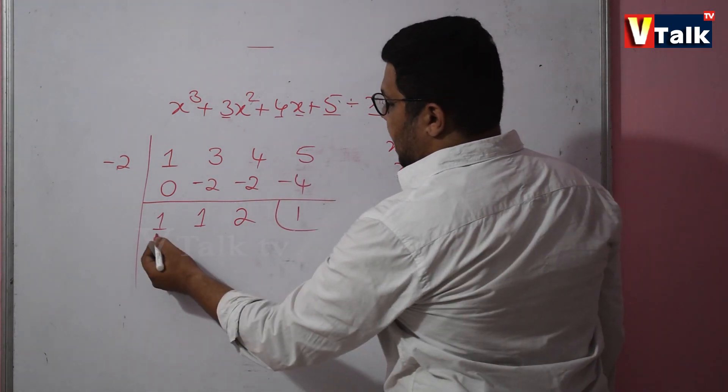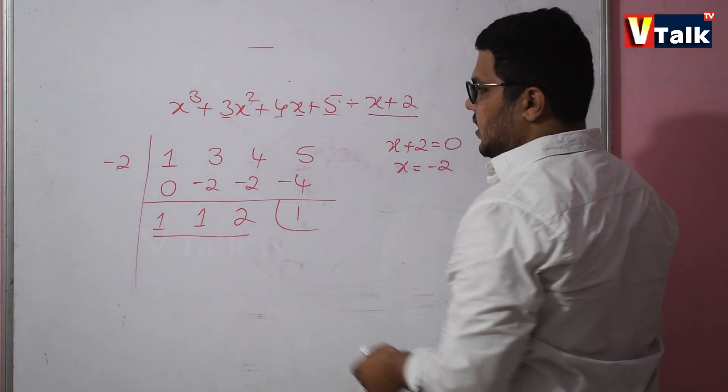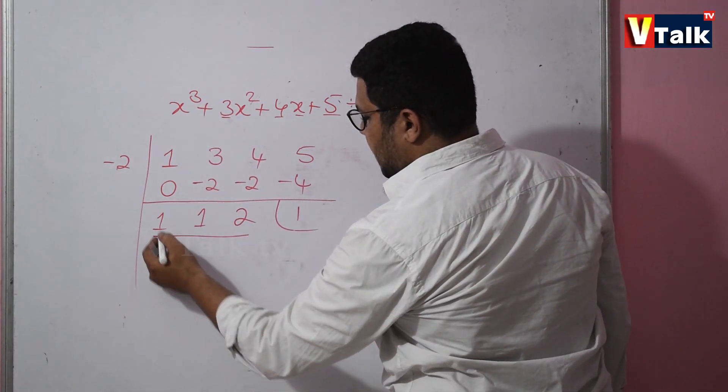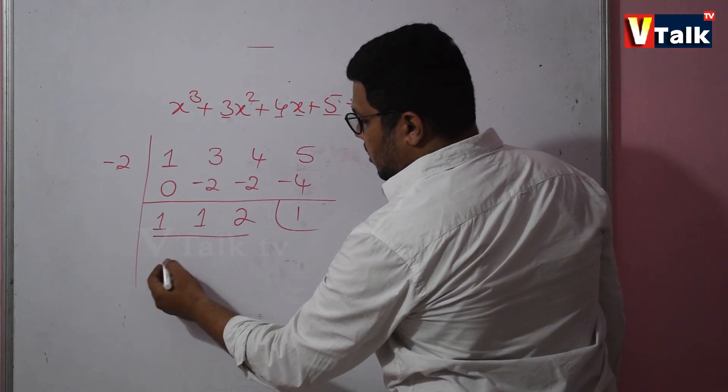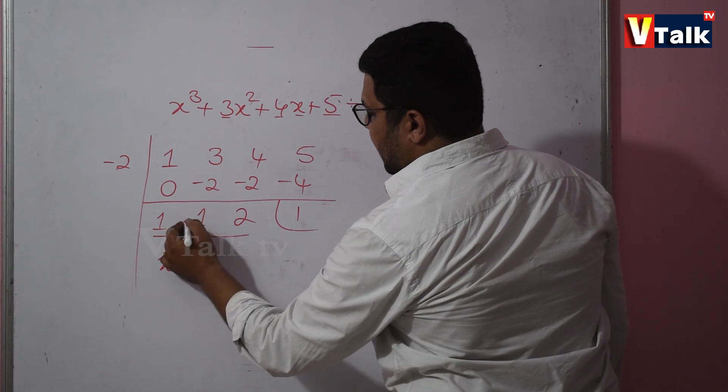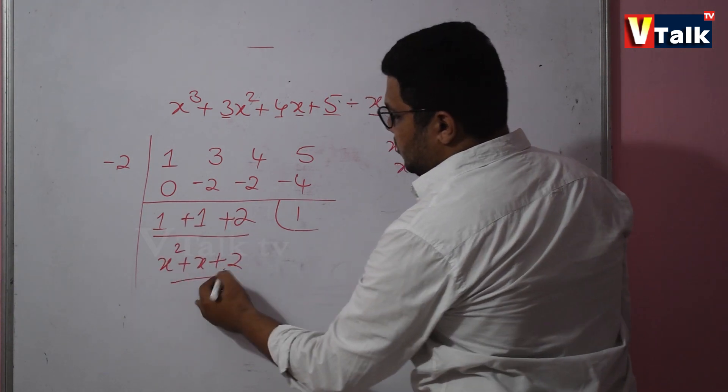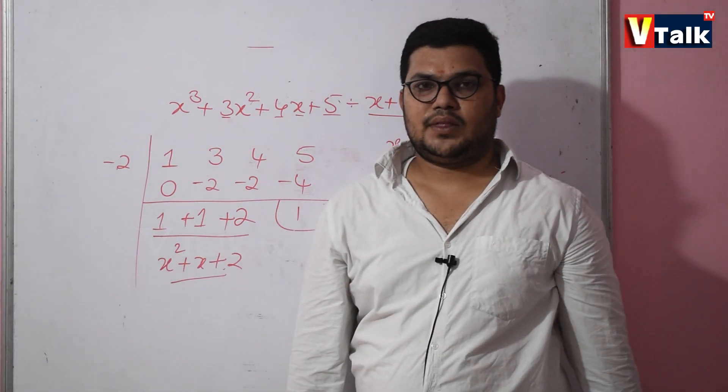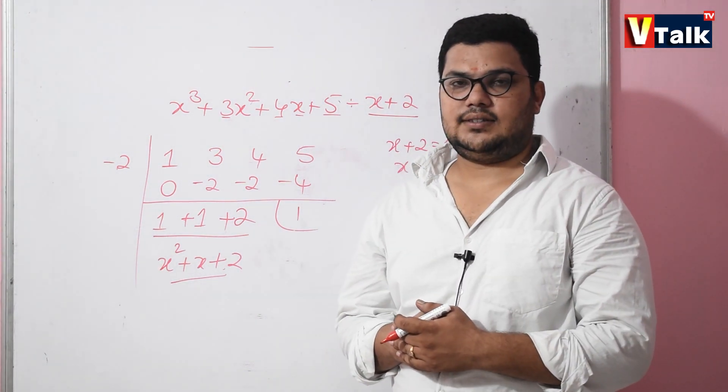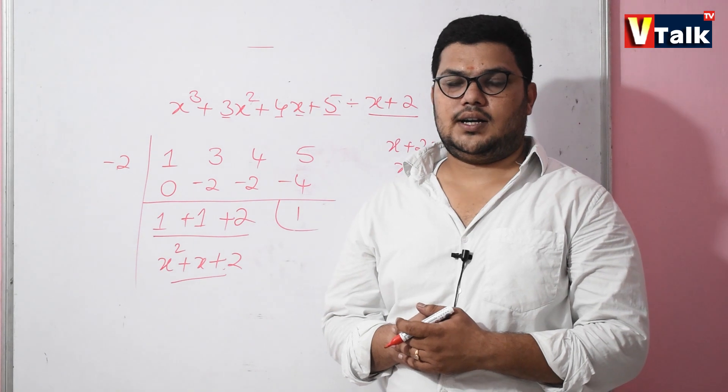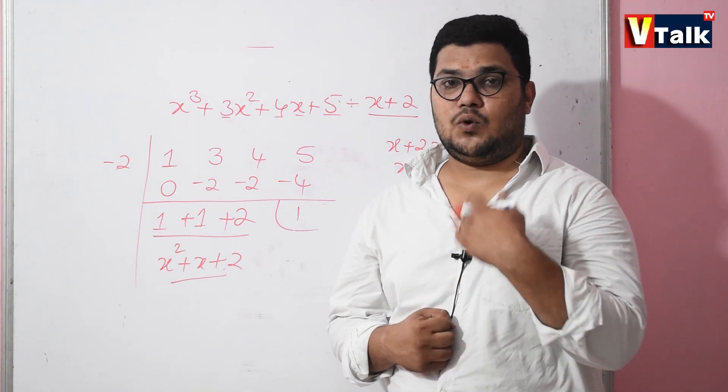So the remainder will be 1, and the quotient is x squared plus 1x plus 2. Before closing the class, let us see one more example so that you can get the trick more easily.